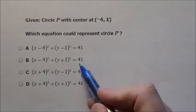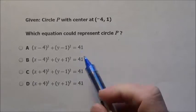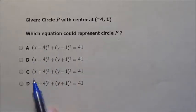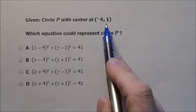Now again, we don't know the radius, so it doesn't make any difference. It's just which of these match up with having a center at negative 4, 1.